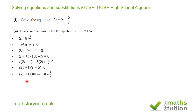So if 2t plus 1 is equal to 0, then t is equal to minus 1 half. Or if t minus 5 is equal to 0, then t is equal to 5. So we have that t is equal to minus 1 half or t is equal to 5.